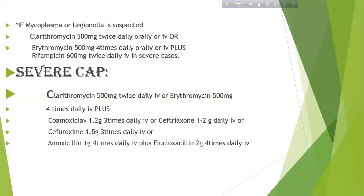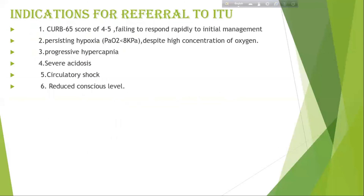In severe pneumonia, the key drug is clarithromycin. Indications for referral to the Intensive Therapy Unit for community-acquired pneumonia: CURB-65 score of 4 to 5, failing to respond rapidly to initial management, persistent hypoxia despite high concentration of oxygen, progressive hypercapnia, severe acidosis, circulatory shock, or reduced conscious level.